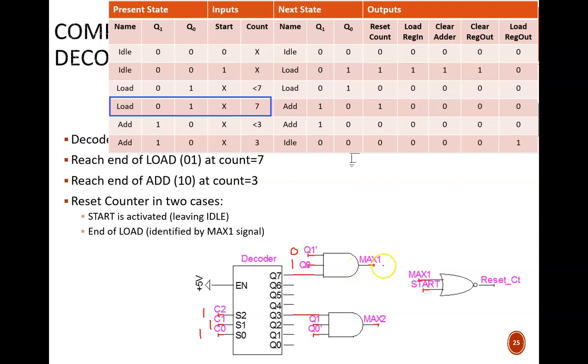This AND gate outputs high only in that special case. Therefore, it identifies the final clock cycle of the load mode. Very similarly, the end of add mode occurs when the count reaches 3 and the state code is 10. This AND gate identifies that special case and outputs max2. As discussed a minute ago, the counter should reset at the end of idle mode, identified by the start signal, OR at the end of load mode, identified by max1.